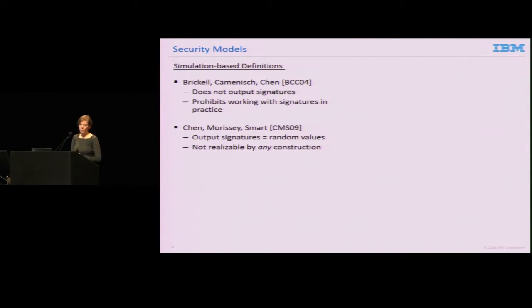In a follow-up paper by Chen, Morrissey, and Smart, they tried to overcome the limitation. In the ideal functionality, they output concrete signature values to the verifier. Unfortunately, this was done in a too simplistic way. They modeled signatures as being truly random values to model that signatures are not allowed to reveal anything about the signer's identity. But that is way too strong because the signature is not a random value. If you have a key, you can distinguish it clearly from a random value. This model was way too strong and could not be realized by any construction.